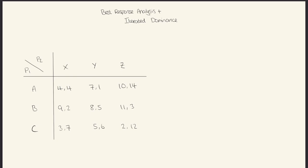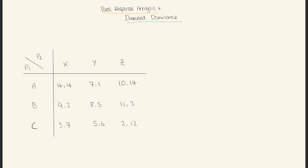We'll start with best response analysis. What we're going to want to do is compare: if player one chooses one of their choices, what would player two choose, and which of player two's choices gives them the highest payoff for themselves? So if we look at option A here...